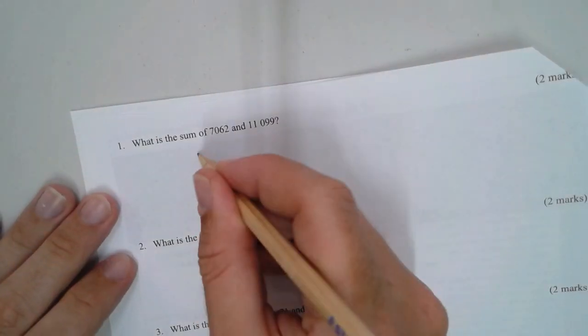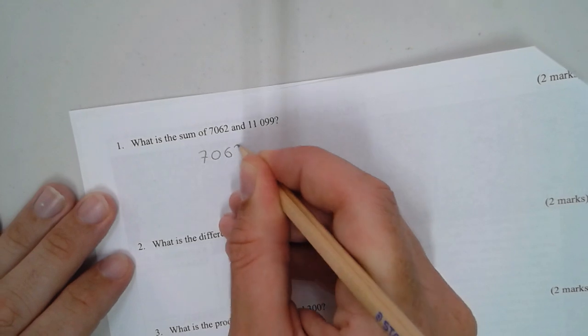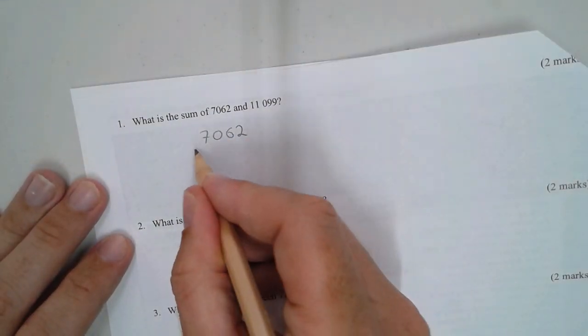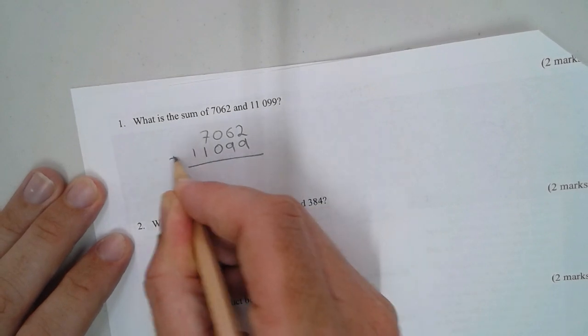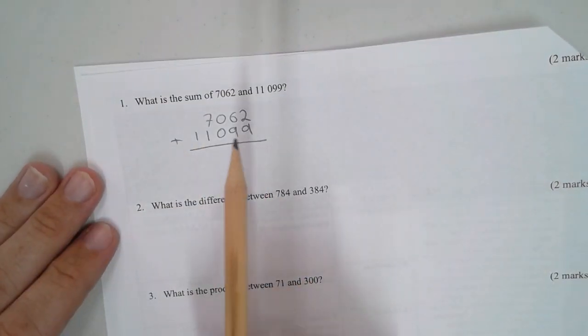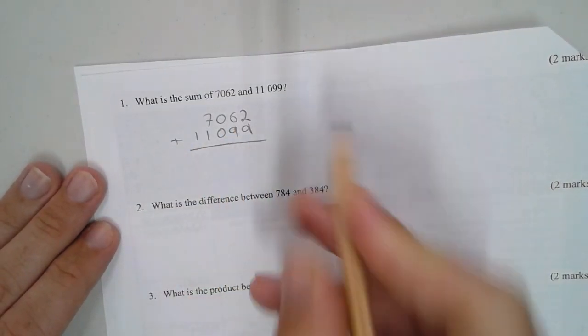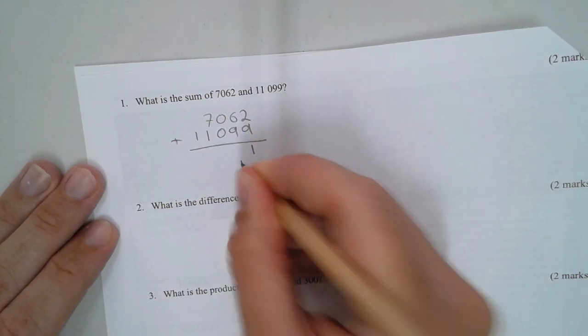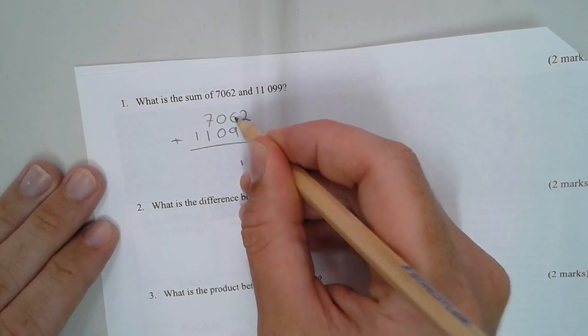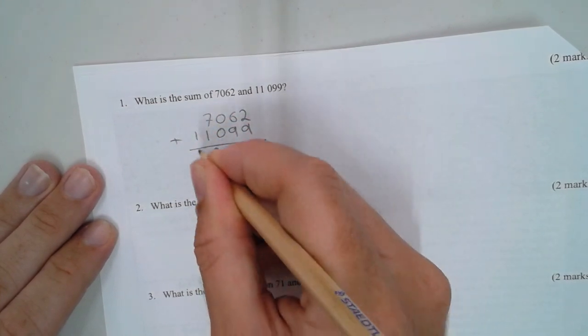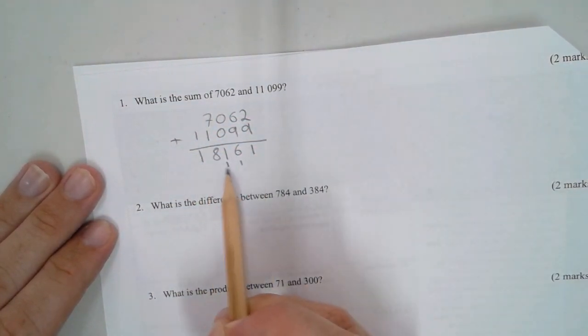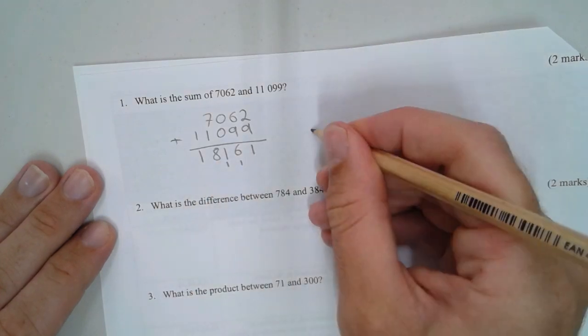We're going to set up an addition sum, and remember place value is important, so that's 11,099. You always want to do a line underneath to differentiate between the question and where you're answering. 2 plus 9 is 11, carry the 1. 9 plus 6 is 15, plus the 1 is 16. 0, 0, 1, 7, 1 is 8, and 1.